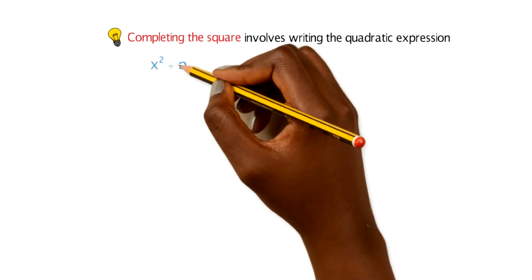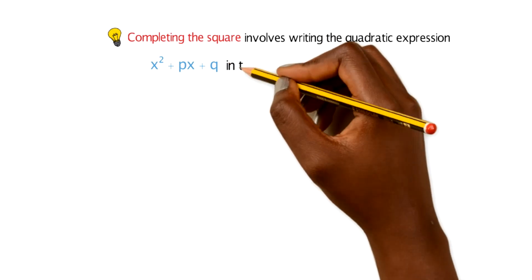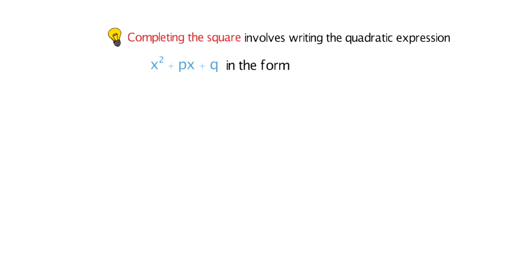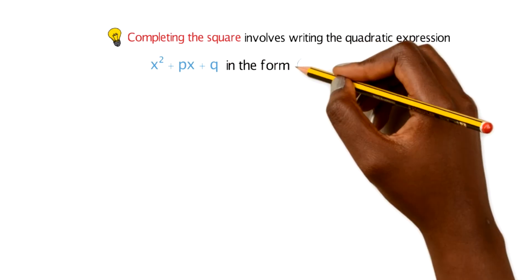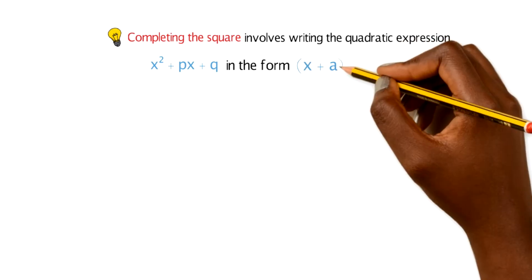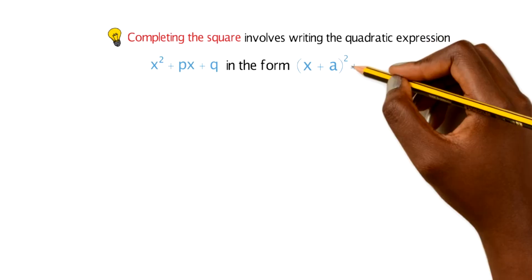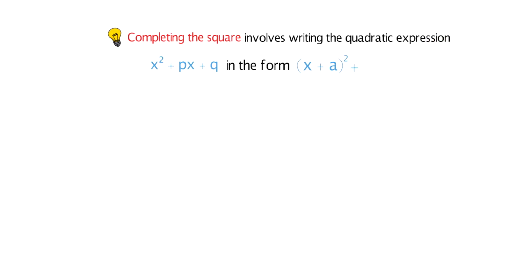This is our quadratic formula format: x squared plus px plus q, but sometimes you may see it written as ax squared plus bx plus c. In completing the square, this is the format we write it in — we have an inner bracket of x plus a, close bracket, squared plus b.